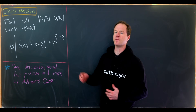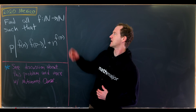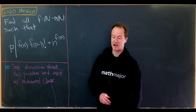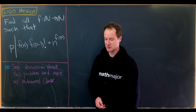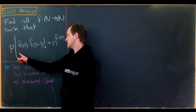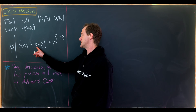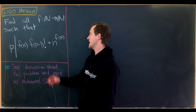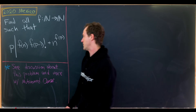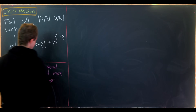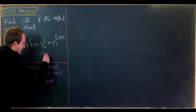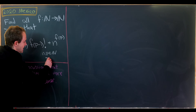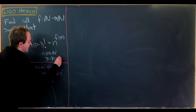So what do we want to do for this problem? We'd like to find all functions from ℕ to ℕ such that p divides f(n)·f(p-1)! + n^f(p), where n and p are both natural numbers and p is prime.